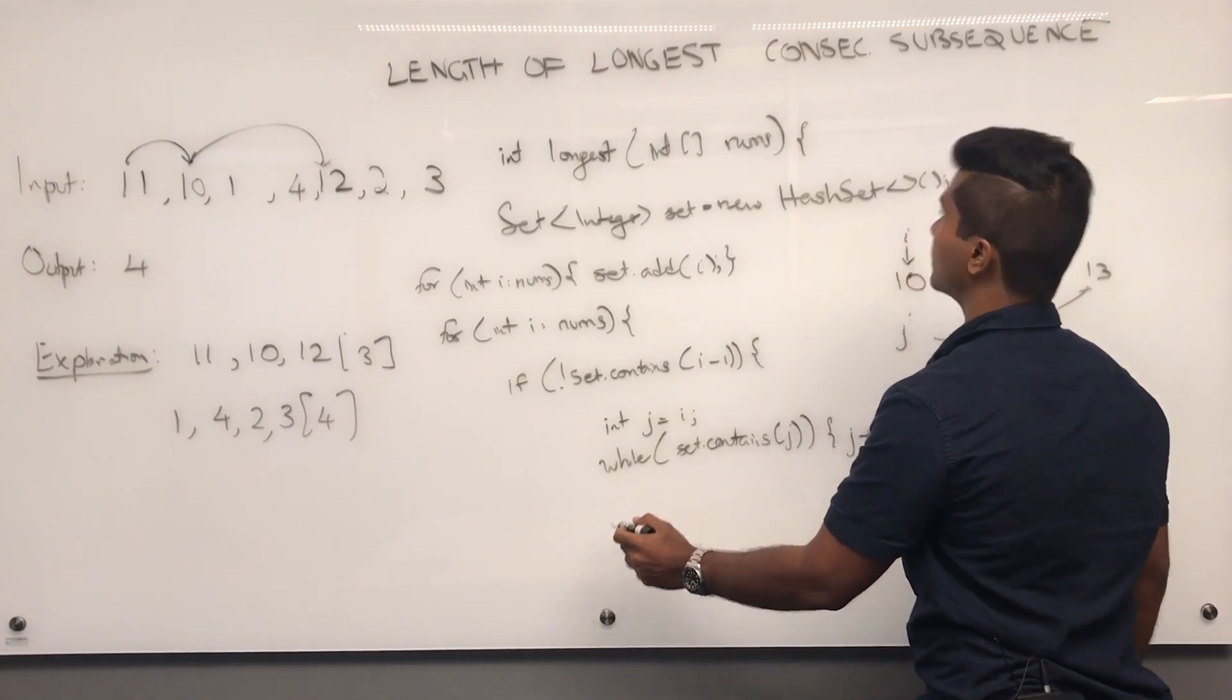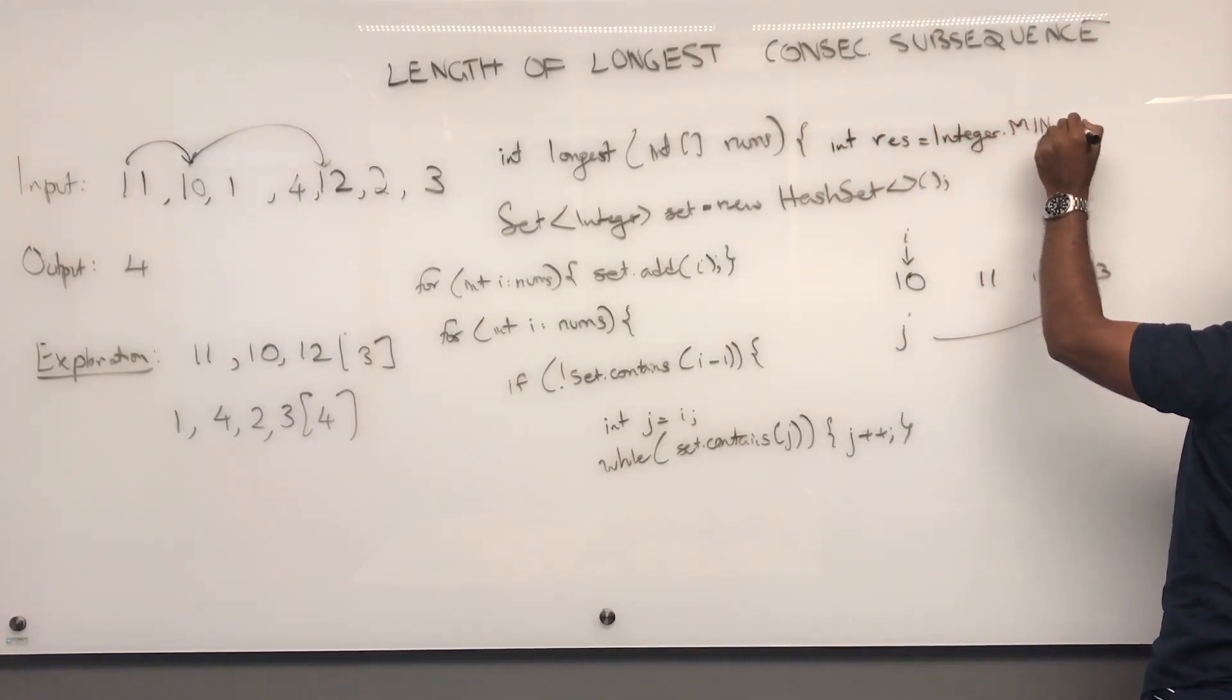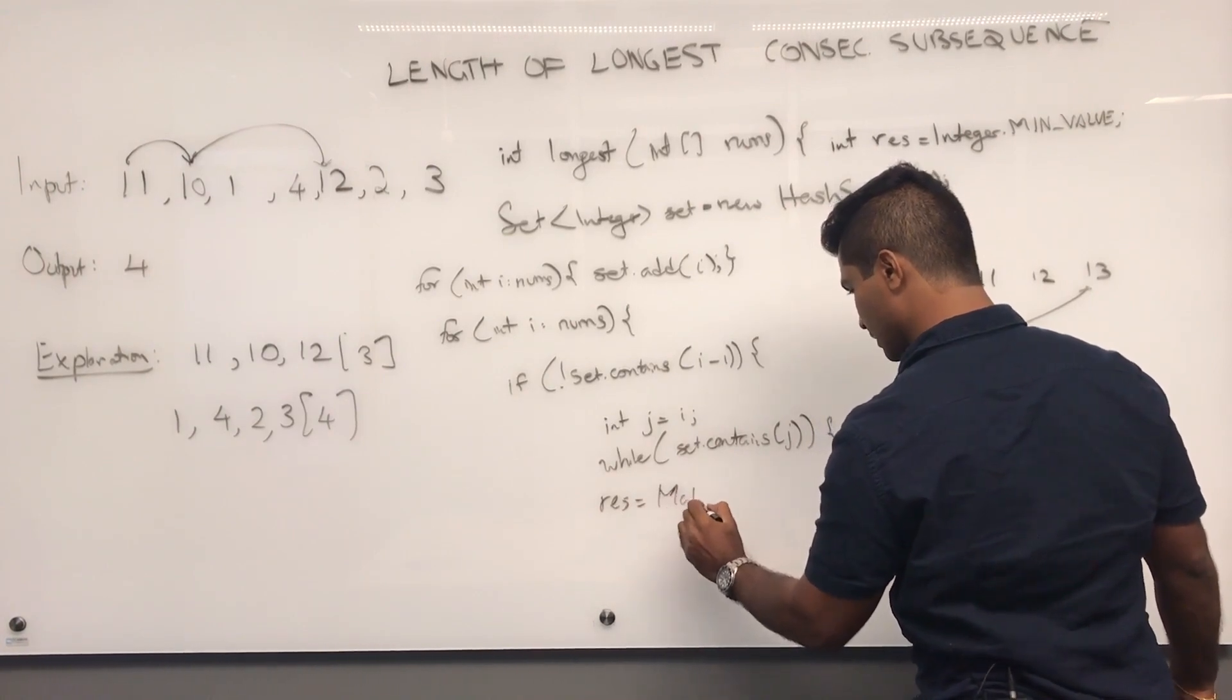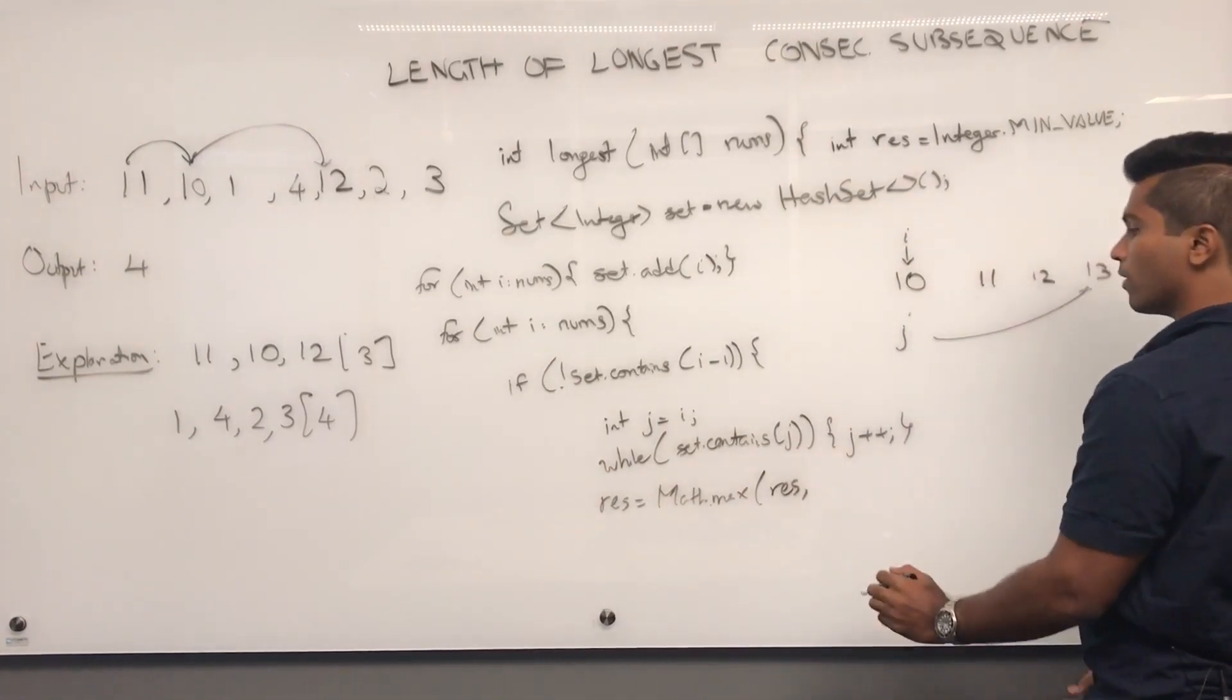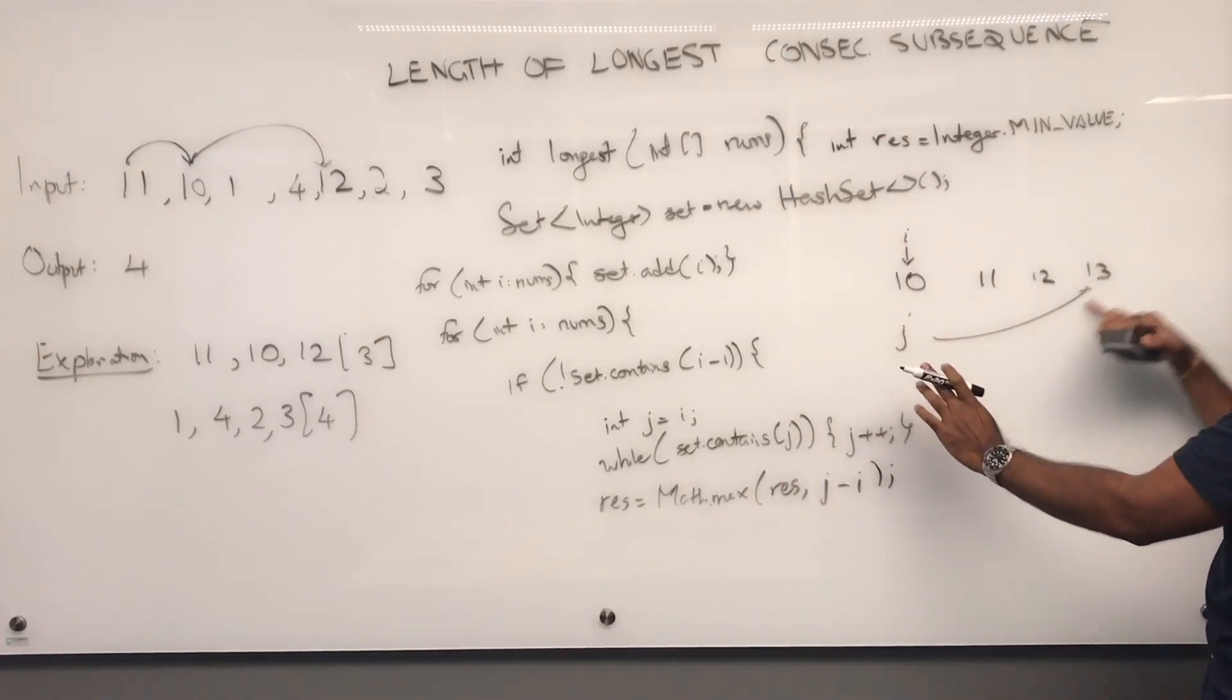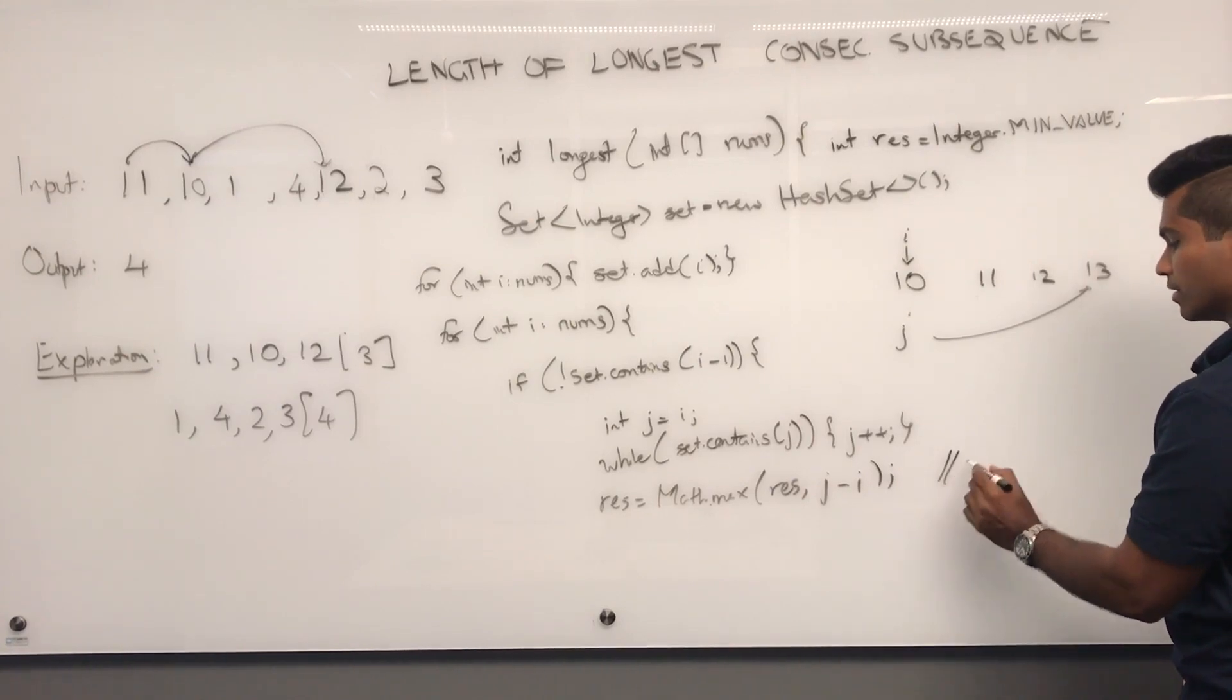And then, we say, okay, this one wants a result answer, right? So, int result is going to be integer dot min value. And we just say result is going to be the math dot max of existing result or j minus i. Now, you can see that i is the initial number that started it. And j is going to be the number that is just missing. So, the difference between these two is going to be three. So, result at this point is going to be three.